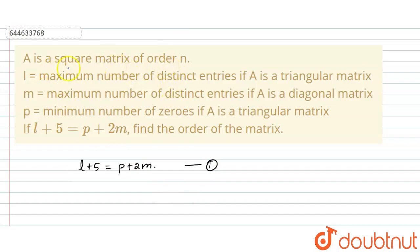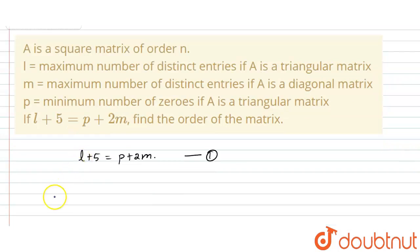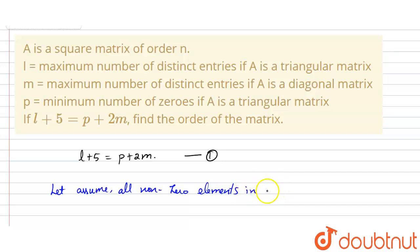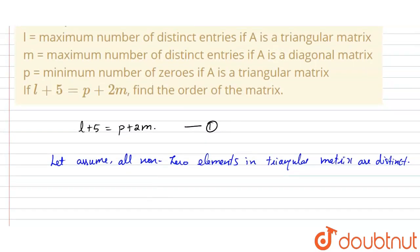A is a square matrix and l is the maximum number of distinct entries if A is a triangular matrix. Let us assume all non-zero elements in a triangular matrix are distinct. So the maximum number is 1 + 2 + 3 + ... up to n. For the first row it is 1, second row it is 2, and so on.